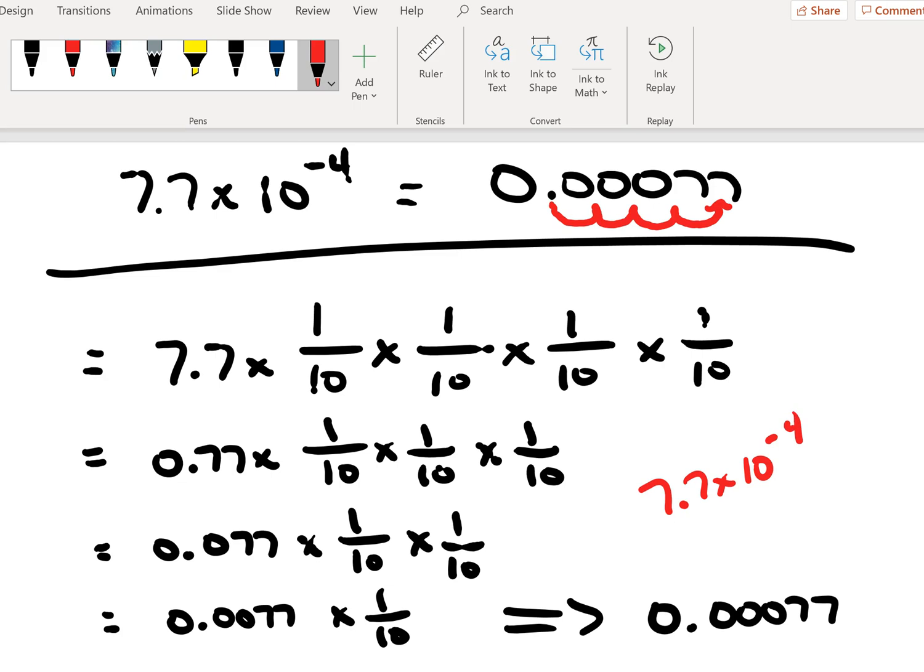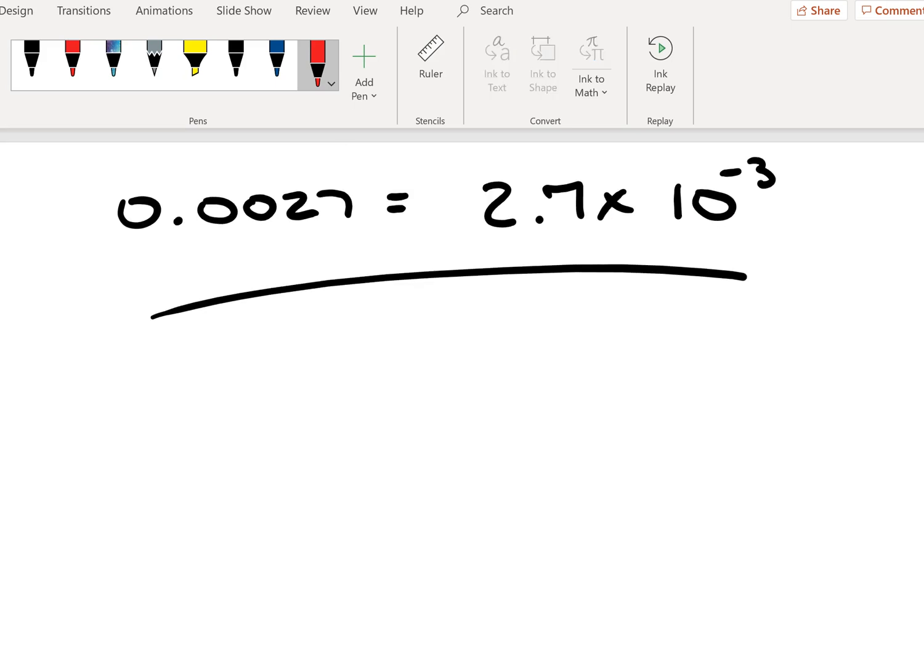Now, let's see if we can establish this process in reverse and determine the scientific notation for 0.0027 and establish that the expression on the right is indeed equivalent to it. We will do this by the similar process whereby we extract successive factors of 1 over 10.